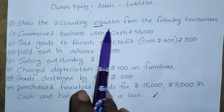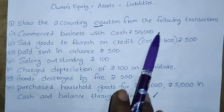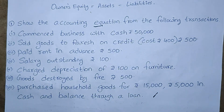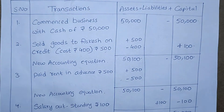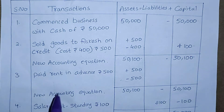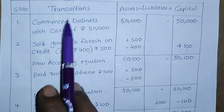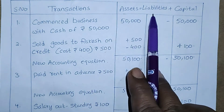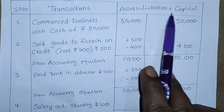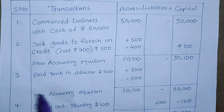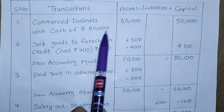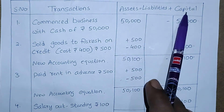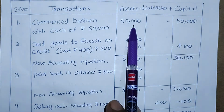Show the accounting equation from the following transactions. Commenced business with Rs. 50,000. For the solution, we have to draw a table. In this table, give headings: first is serial number, next is the transaction, next showing Assets = Liabilities + Capital. For the first part — commenced business with cash of Rs. 50,000 — write 50,000 under the assets column and 50,000 under the capital column.